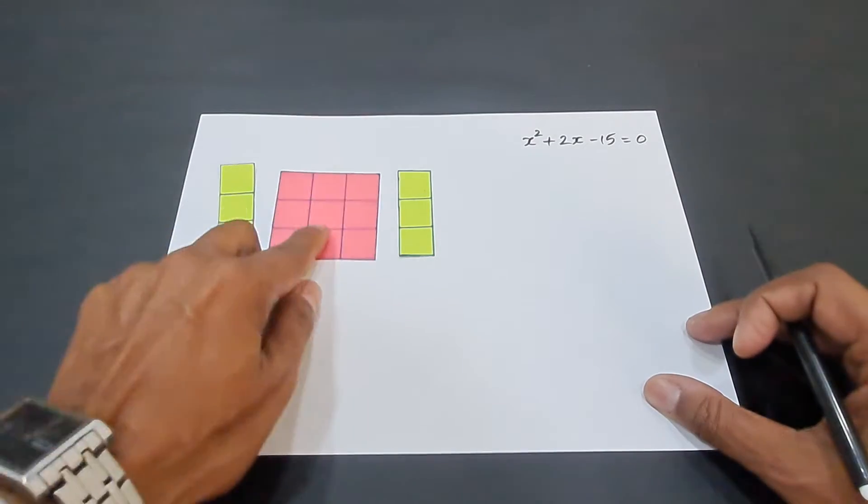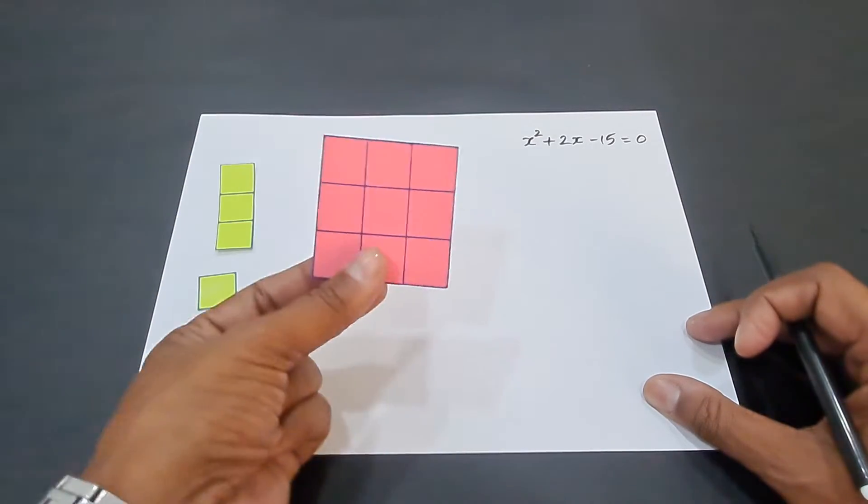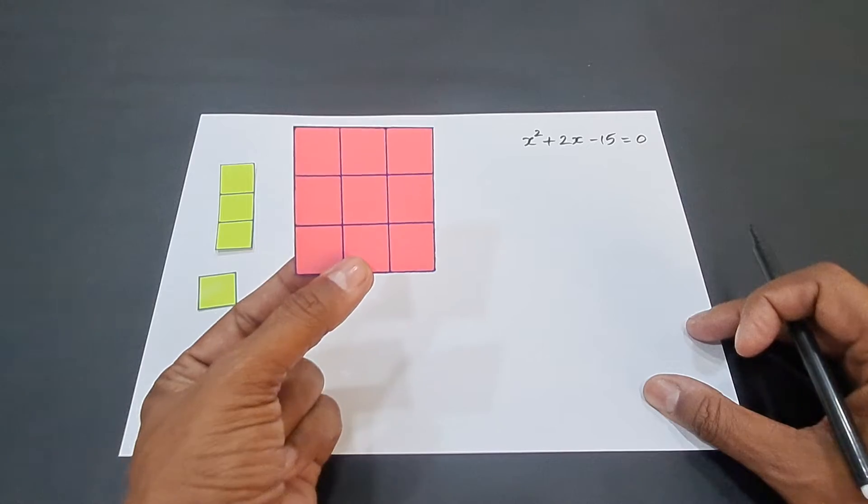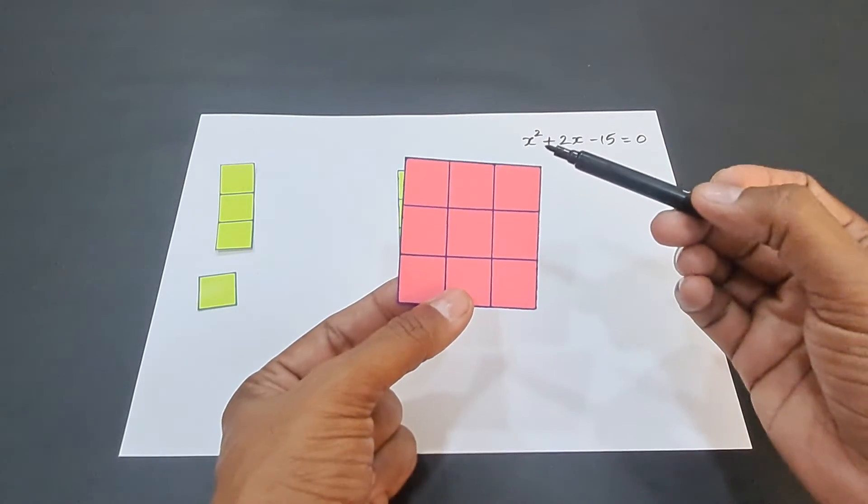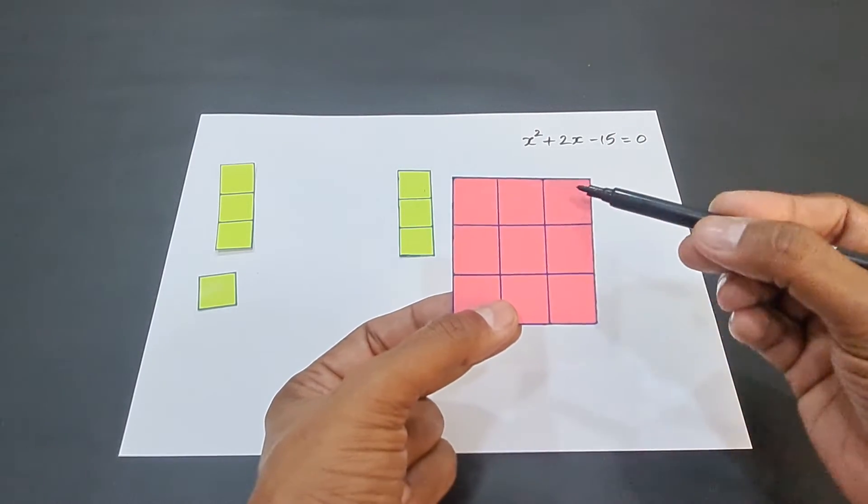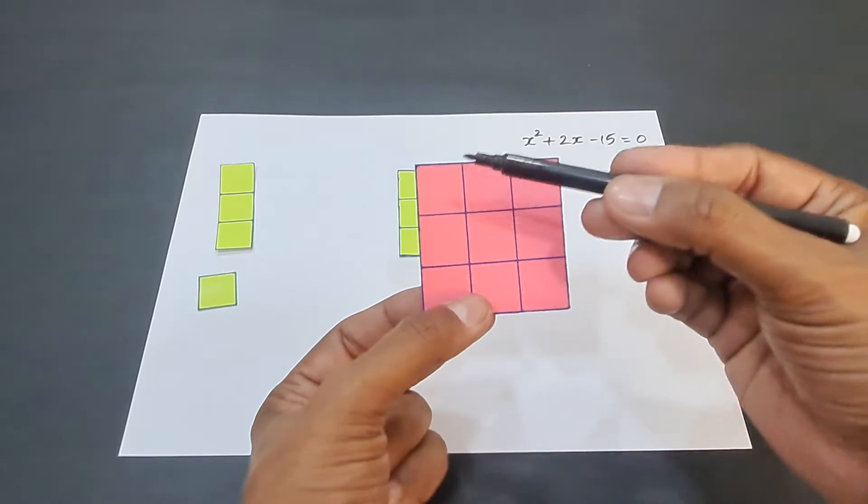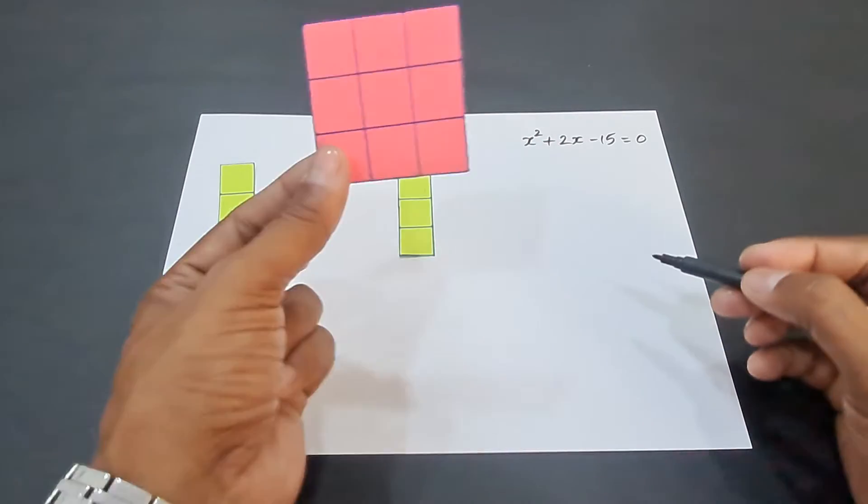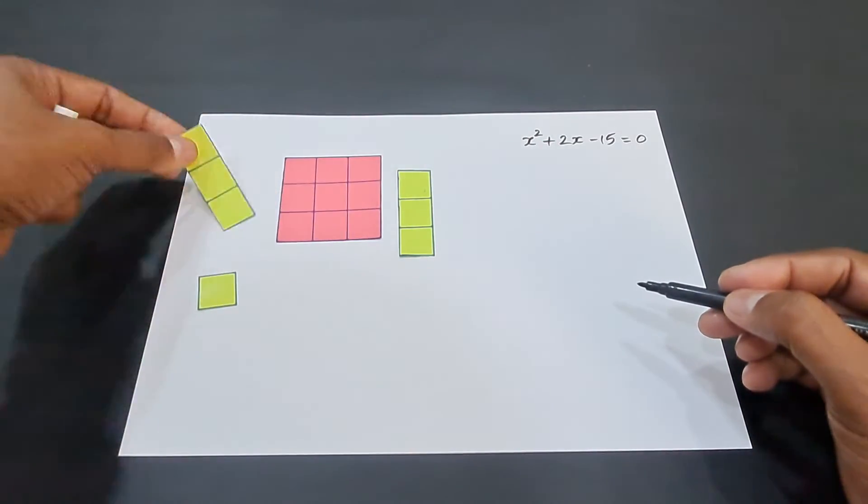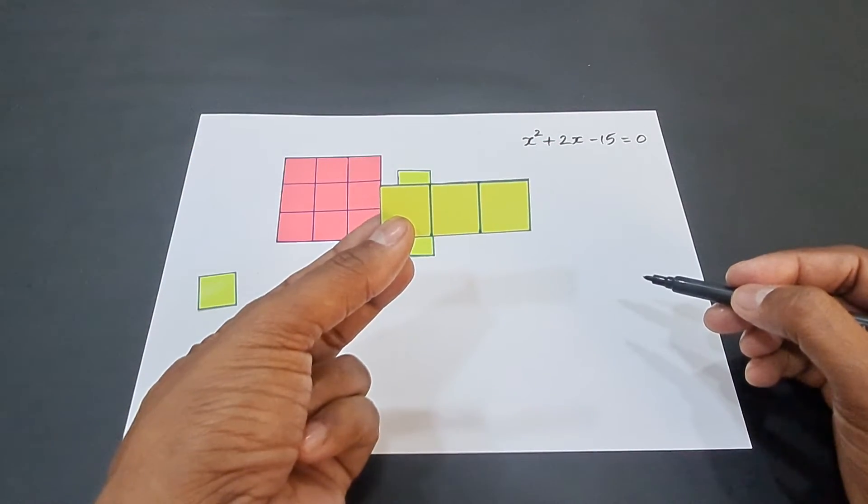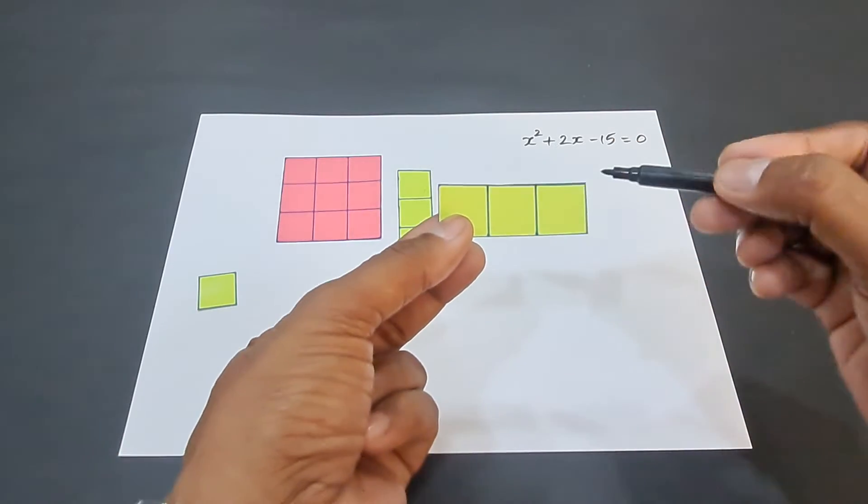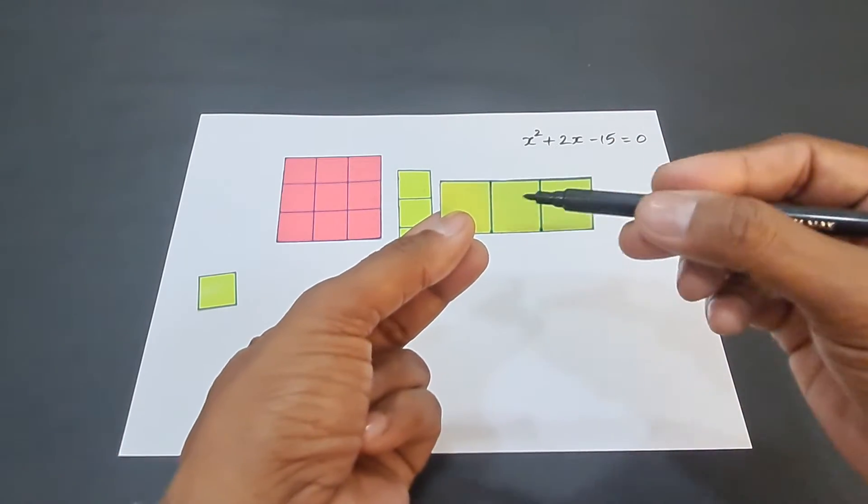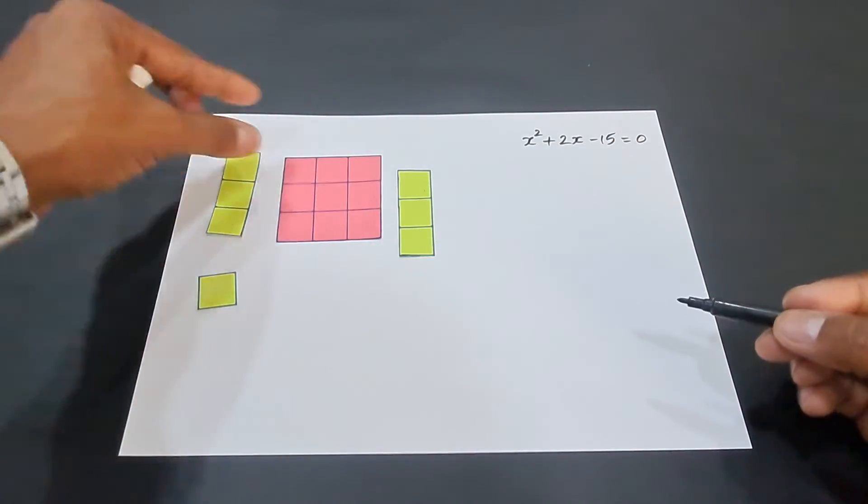In this activity, we require a cutout in the shape of a square of 3 units side. The length of the side can be either 1 centimeter or 1 inch. This is 3 units by 3 units. Then, we require another cutout whose dimensions are 3 units by 1 unit, with 3 squares on it.